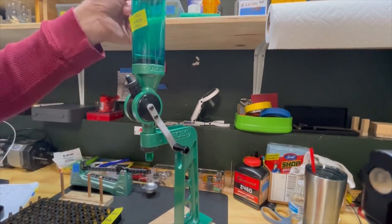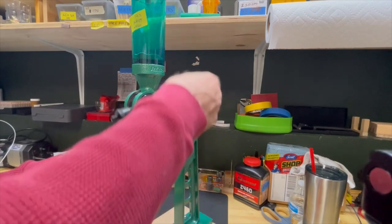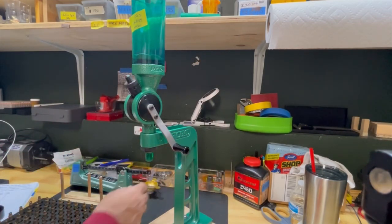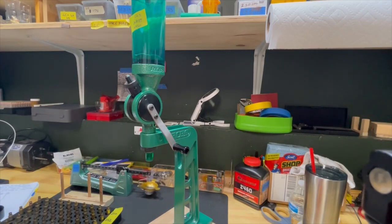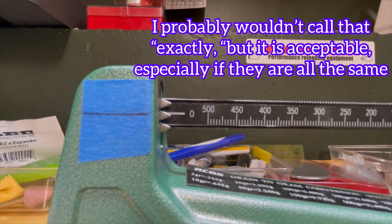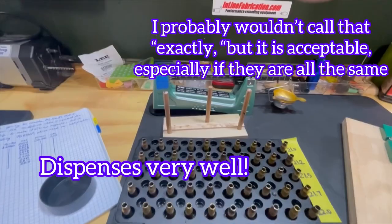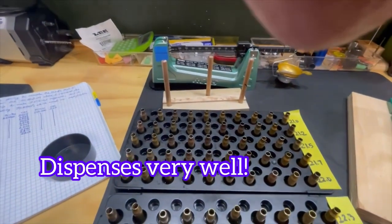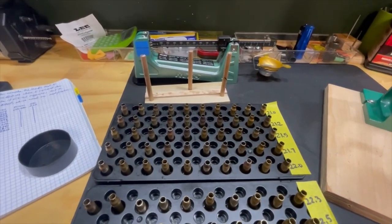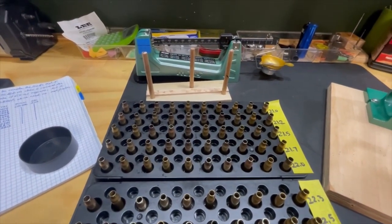I just loaded the last 10. After every 10 rounds, I would drop another charge and put it on the scale. Every time, that scale would be exactly on zero. This ball powder measures very well, so you can load directly into the cases with these. I just check after each 10 to verify. After each 10, they were always exactly on target.